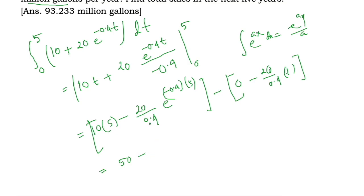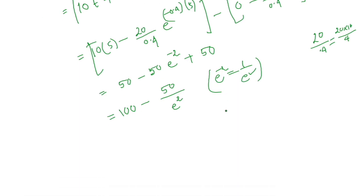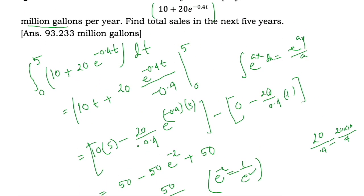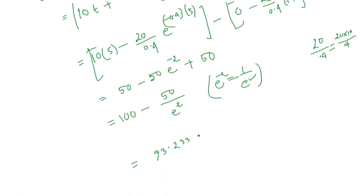Now 20 divided by 0.4 equals 50. So we have 50 minus 50 times e to the power minus 2, minus the quantity negative 50, giving plus 50. So 50 plus 50 equals 100, minus 50 divided by e squared, since e to the power negative 2 equals 1 over e squared. Using a calculator, this gives approximately 93.233 million gallons.